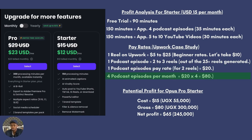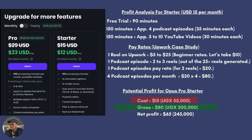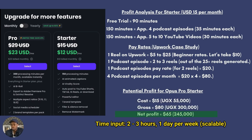So one podcast episode, assuming they're paying for two reels at $10 each, comes to $20. With four podcast episodes per month, that's $80 gross. After subtracting the $15 tool cost, net profit is $65, or about 245,000 Ugandan shillings. Opus Clip is really one of those mind-blowing AI tools — if a podcaster doesn't have time to create short-form videos for Instagram, TikTok, and other platforms, you are in a position to earn quite a bit of money with short-form video creation.